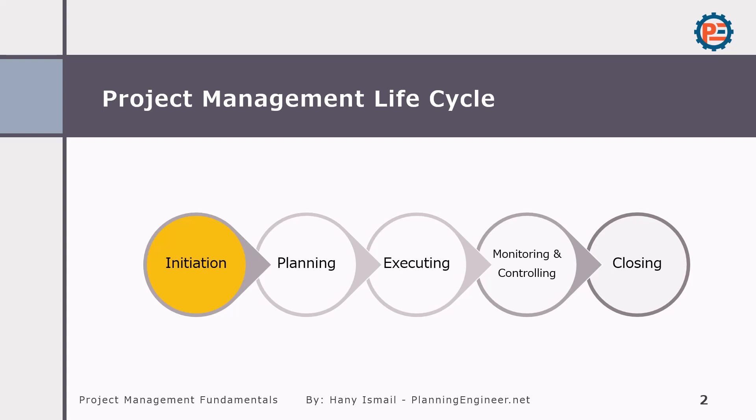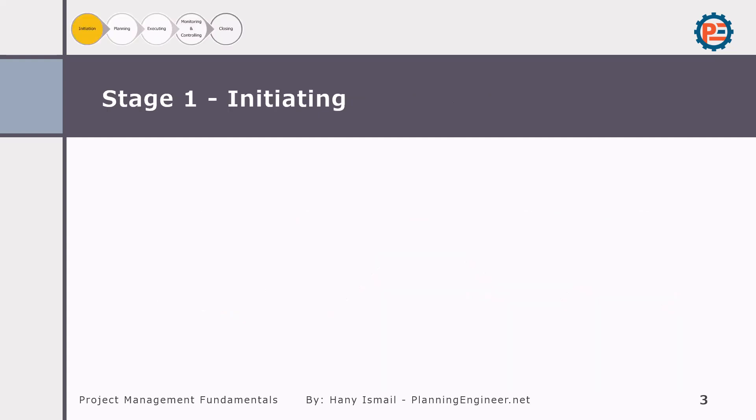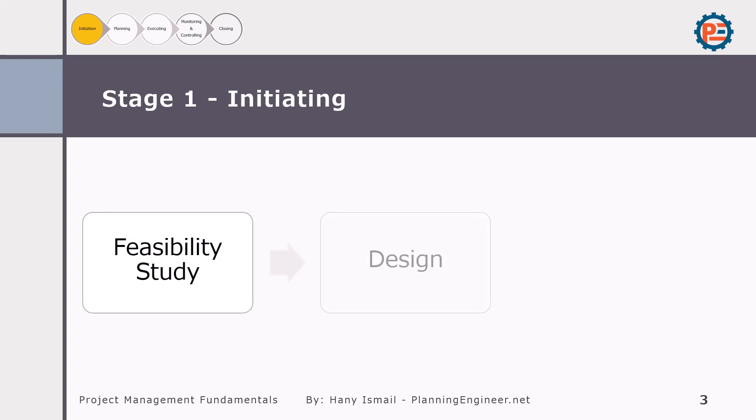Today our focus will be on the first phase — initiation — where the groundwork for the entire project is laid. The initiation phase is critical because this is where the project is formally started. The main activities here include conducting a feasibility study, engaging in design work, and moving through the tender process.